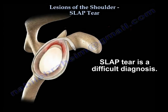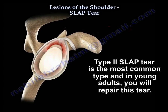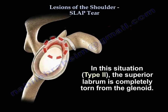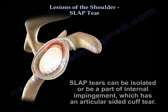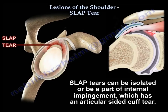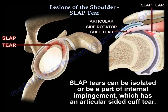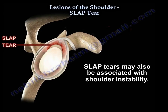SLAP tear is a difficult diagnosis. Type 2 SLAP tear is the most common type, and in a young adult you repair this tear. In this situation the superior labrum is completely torn from the glenoid. SLAP tear can be isolated or part of internal impingement, which has an articular-sided cuff tear. It also can be part of shoulder instability.